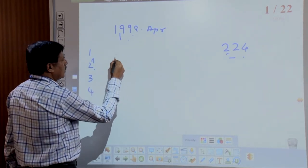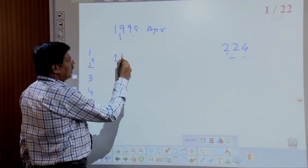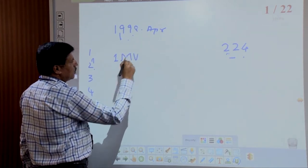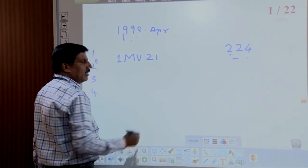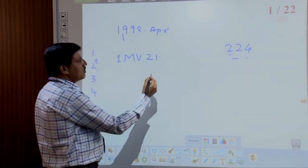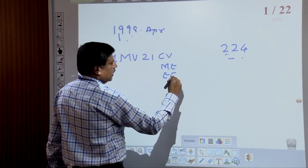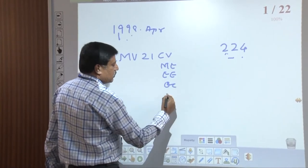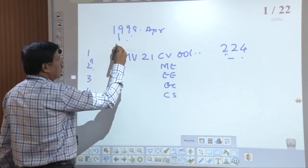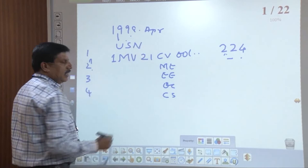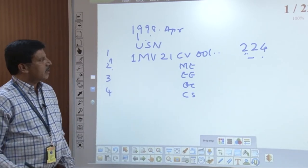The number '1' stands for Bangalore region. For example, students studying in the Bangalore region have '1' followed by the college code — like MV for my college — then the year of joining, say 2021 written as '21', then the branch code: Civil as CV, Mechanical as ME, Electrical as EE, Electronics as EC, Computer Science as CS, followed by a serial number like 0012.